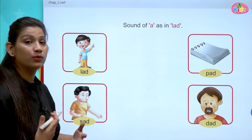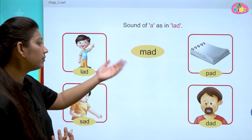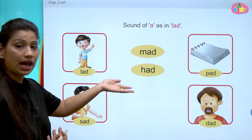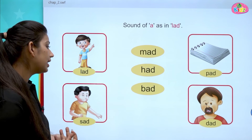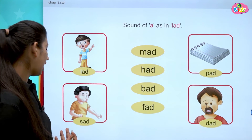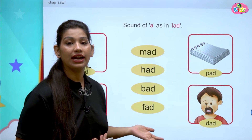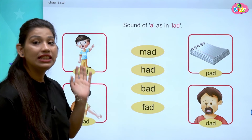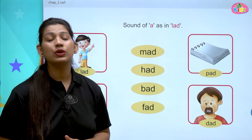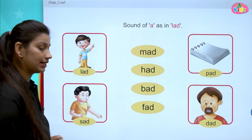Let us understand more words with AD. M, A, D — Mad. H, A, D — Had. B, A, D — Bad. These were the words with AD sound.